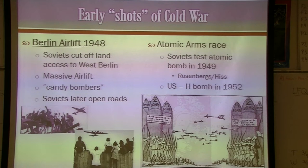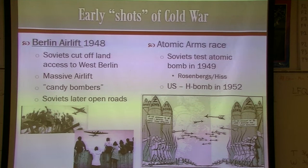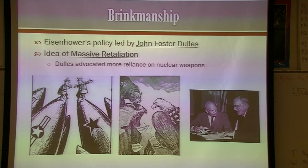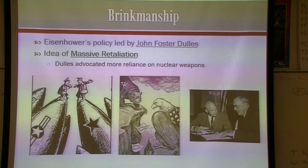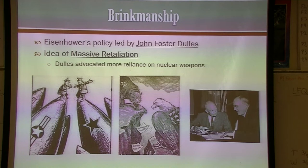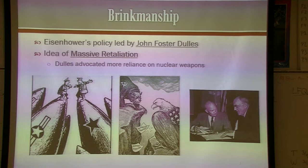Bombs get more and more powerful, and eventually we develop ICBMs — intercontinental ballistic missiles. The terms you need to know are brinkmanship and massive retaliation: the idea is if you do something to us, we're going to bomb you heavily. By the 1980s we have what's known as mutual mass destruction — if both sides launched, it would destroy the earth. One estimate says between just the US and the Soviet Union, there were enough nuclear weapons to blow the world up four and a half times over.